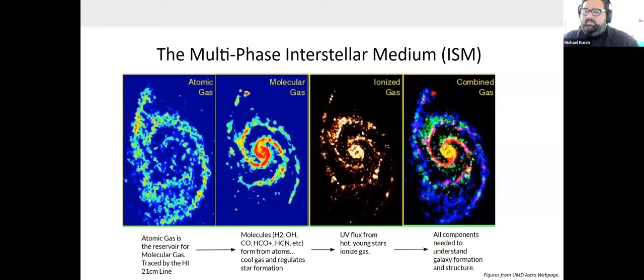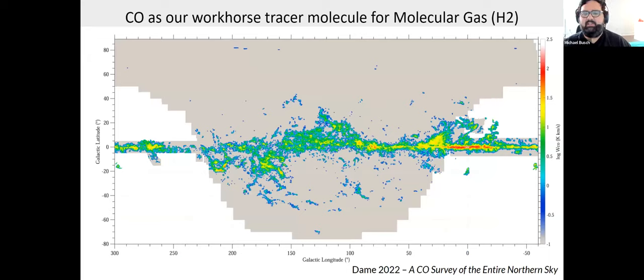I'm generally interested in the multiphase interstellar medium. For the reservoir from atomic gas, we think it generates molecular gas, forming stars in giant molecular clouds, which then ionizes gas. Every component of the ISM is important. For molecular gas, our workhorse tracer for many decades has been carbon monoxide molecules, specifically the J1-0 line, because it's incredibly bright and very abundant. This is the DAME 2020 composite CO survey of our Milky Way.